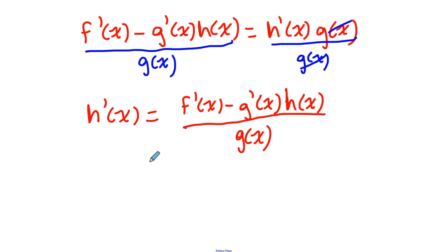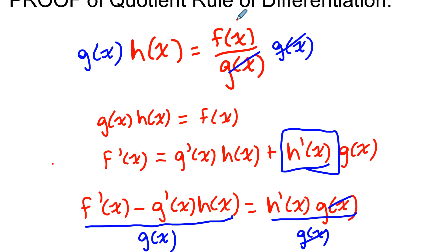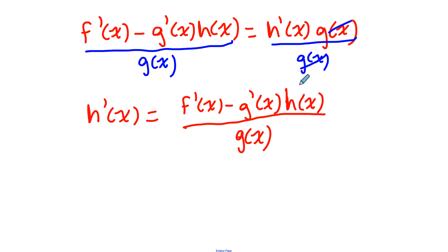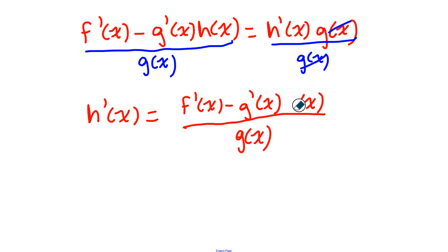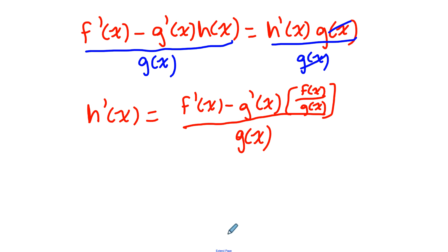The only thing we have left to do is replace this h(x). Remember, if we look back to where we started, h(x) is equal to f(x) over g(x). So I can replace this h(x) with f(x)/g(x), because that's what it's equal to. I'm just going to replace that h(x) with f(x)/g(x). This is the equation of the derivative of h(x), but it can be simplified.